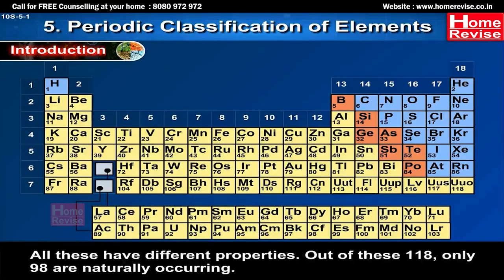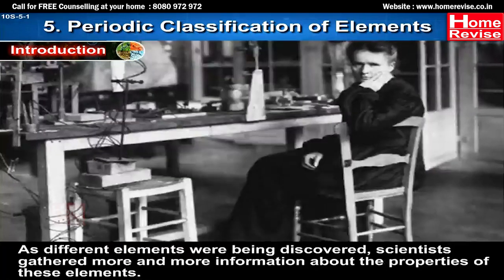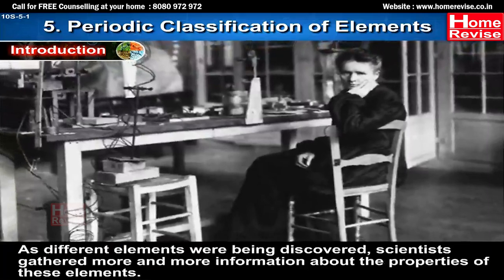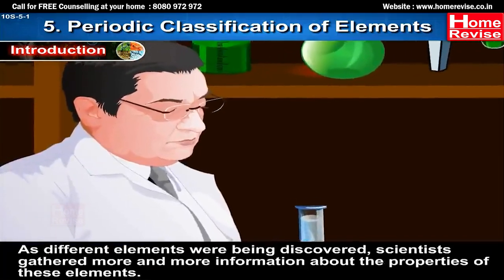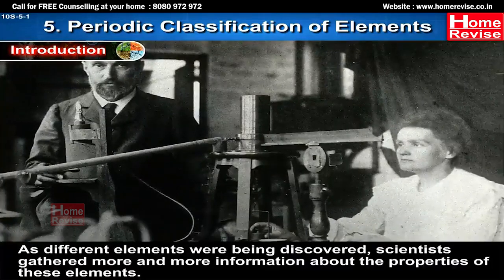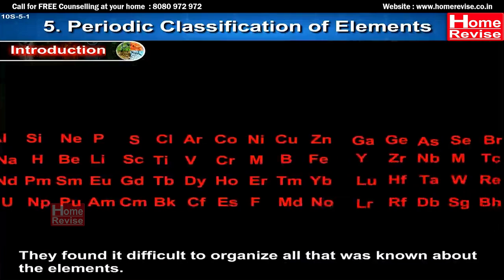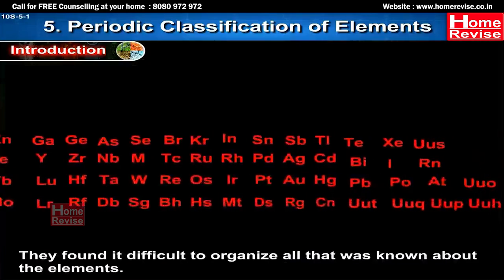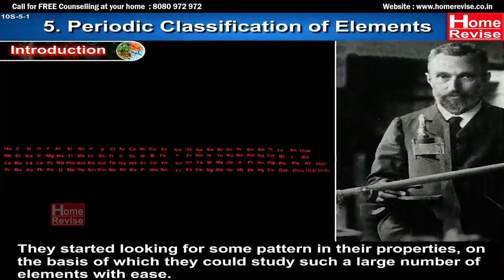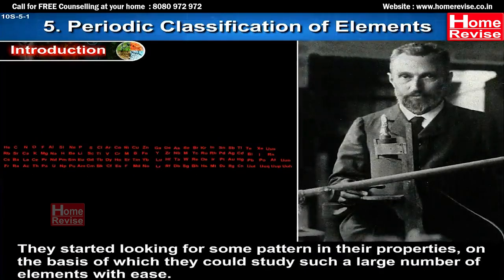All these elements have different properties. Out of these 118, only 98 are naturally occurring. As different elements were being discovered, scientists gathered more and more information about their properties and found it difficult to organise all that was known. They started looking for some pattern in properties on the basis of which they could study such a large number of elements with ease.